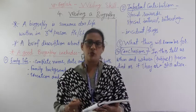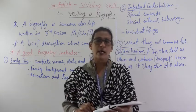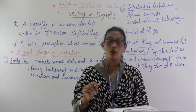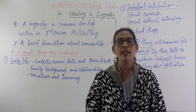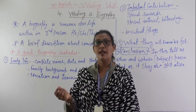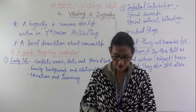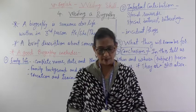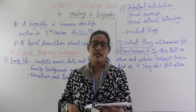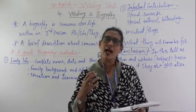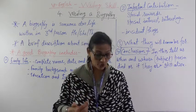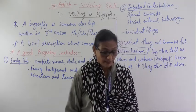The main points to be included in the biography: complete name, date of birth of that person - when he was born, where he was born, where he completed his education. All this must be there. Family background and their relationship with that personality. And the personality traits - what is the habit of that personality. Education and training also you can write.